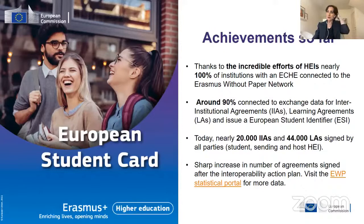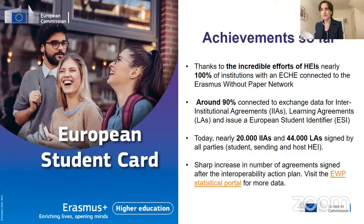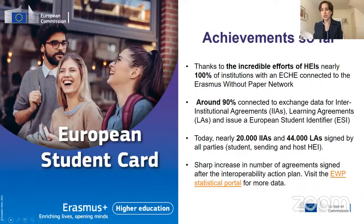We can see that now about 100% of higher education institutions having an Erasmus Plus charter are now connected to the Erasmus Without Paper network, with about 90% of higher education institutions connected to exchange and agree on inter-institutional agreements and learning agreements, together with issuing a European Student Identifier that helps with facilitating and simplifying this process. Thanks to this really collective effort, we have almost multiplied by 10 the number of inter-institutional agreements and learning agreements signed, between July and October this year.